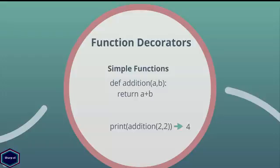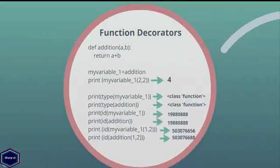So if functions are also objects, I can assign a function to a variable, just like I assign an integer object to a variable. Let's see an example. Here I have a variable my_variable1 and I assign the function addition to my_variable1. Note there are no parentheses after the addition function, so I am not calling it but assigning my variable to it. Now I can call my function using my_variable1 with parentheses, just like I would have done with the addition function.